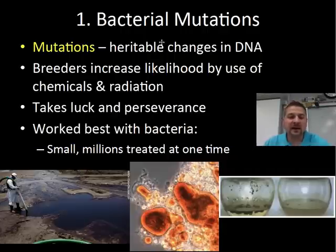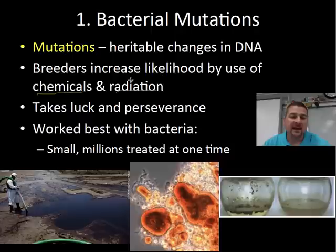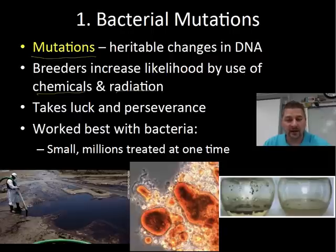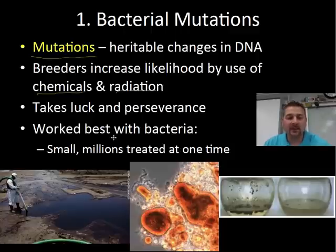Some examples: one would be bacterial, and we'll also talk about plants. Bacterial mutations are done by using chemicals or radiation, and it takes some luck and perseverance because mutations are random changes in the DNA. Some changes you might not notice, some might be bad, but hopefully with a little bit of luck you can get changes that create a useful phenotype. Bacteria are easy to work with because on a petri plate you can zap millions of organisms with radiation or treat them with chemicals at one time, so your chance of getting a positive mutation is much higher.